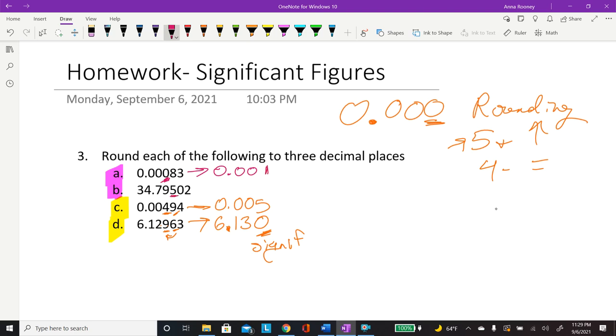And then this next one, there's your point, and then the number next to it is a 0. So that's 4 and below. You will have 34.795. So nothing happens on that last one.